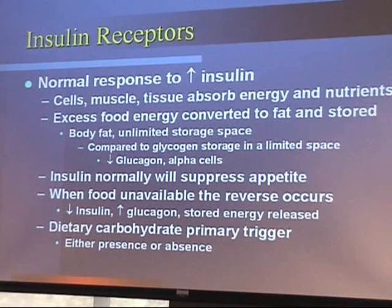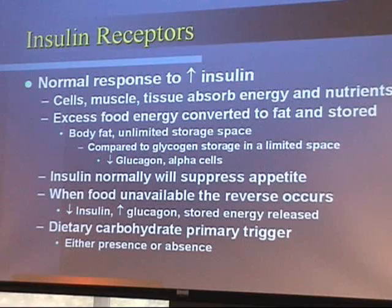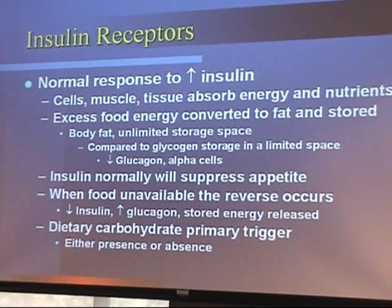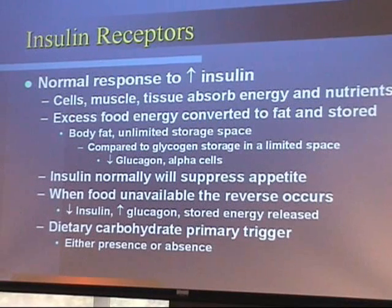Glycogen stores in the liver and lean muscle are limited and contribute less. As insulin goes up, glucagon tends to go down — glucagon is produced by the alpha cells in the pancreas — and the message there is storage: we're in storage mode.